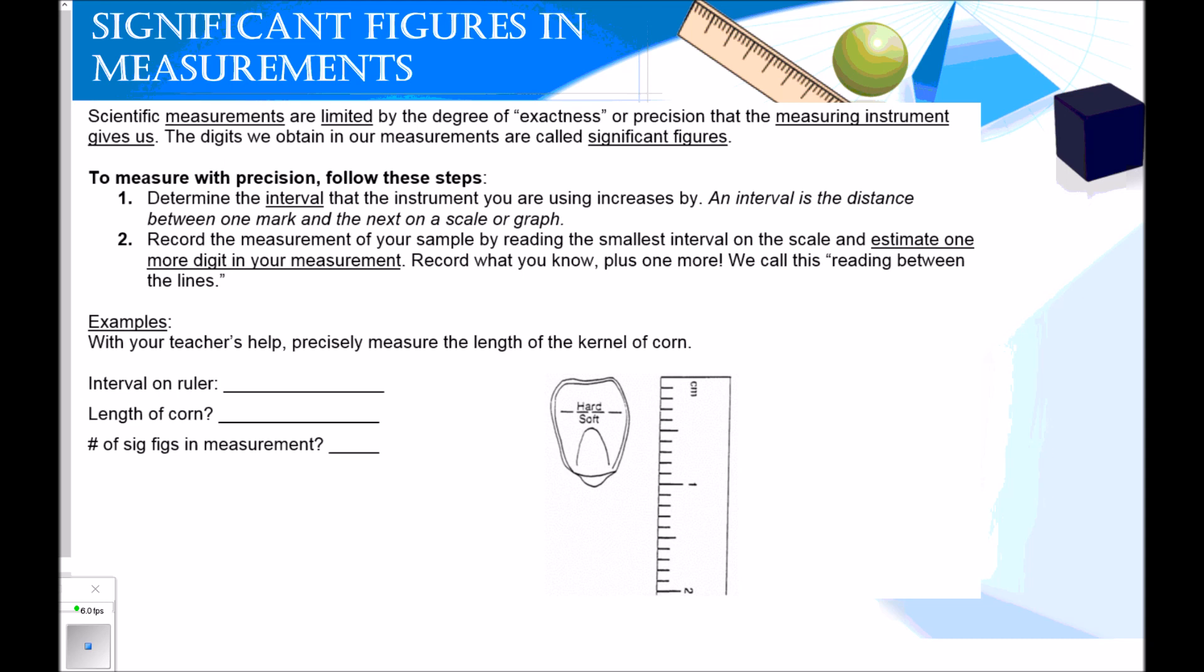To measure with precision, we're going to follow these steps. Number one, we're going to determine the interval that the instrument you are using increases by. An interval is the distance between one mark and the next on a scale or graph. Number two, we're going to record the measurement of your sample by reading the smallest interval on the scale and estimating one more digit in your measurement. Record what you know plus one more. We call this reading between the lines.